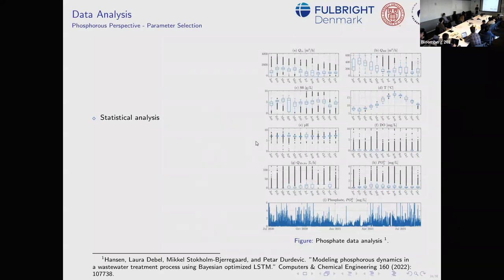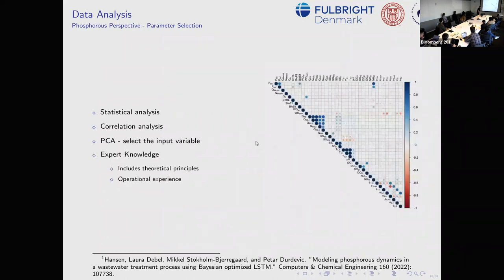Sometimes the outliers are true measurements and sometimes something is wrong with the sensor — sensors need to be calibrated and cleaned. We also perform correlation analysis, and we look at different periods because summer, winter, rainy, and non-rainy periods have different influences. Of course it doesn't give the full picture — you can have an industry that lets out some chemical that kills some biological material, and we can't predict that.